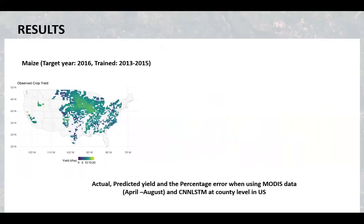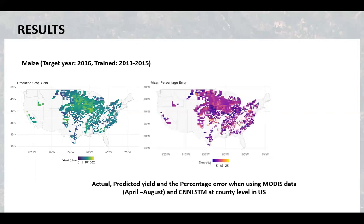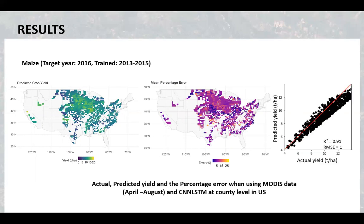The performance of different models varied when using different inputs at both county and field level. For county level analysis, the CNN-LSTM model had the highest accuracies. Here you can see one example for maize when the target year was 2016 and the model was trained on historical data from 2013 to 2015. We can see quite a low percentage error in main maize growing areas, as well as good agreement between predicted and actual yield.